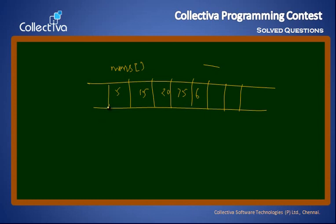In the concept of finding the biggest number, one variable is used. In that variable, the biggest number is stored. All numbers in the array are scanned and compared.